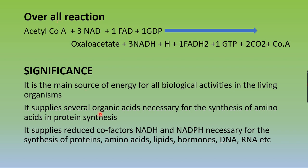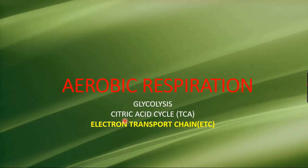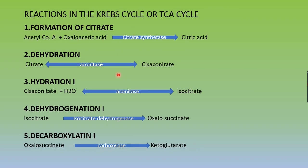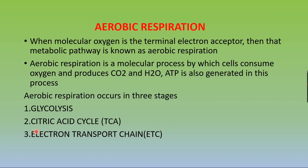The significance of the TCA cycle: it is the main source of energy liberation for all biological activities in living organisms. It also supplies various organic acids necessary for amino acid synthesis in protein synthesis, and supplies reduced cofactors like NADH and NADPH necessary for synthesis of proteins, amino acids, lipids, hormones, and nucleic acids such as DNA and RNA. This concludes the TCA cycle — the second stage of aerobic respiration.